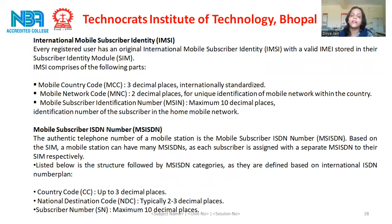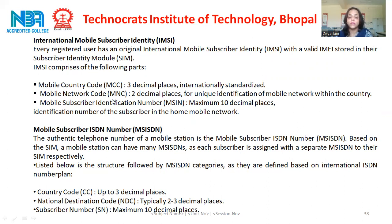The International Mobile Subscriber Identity — IMSI — is stored in the SIM. Every registered user has an original IMSI with a valid IMEI stored in their subscriber identity module. IMSI comprises: Mobile Country Code MCC — 3 decimal places, internationally standardized; Mobile Network Code MNC — 2 decimal places, for unique identification of the mobile network within the country; and Mobile Subscriber Identification Number MSIN — maximum 10 decimal places, the identification number of the subscriber in the home mobile network.